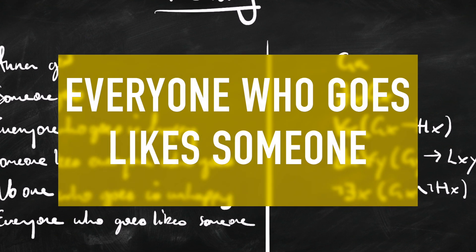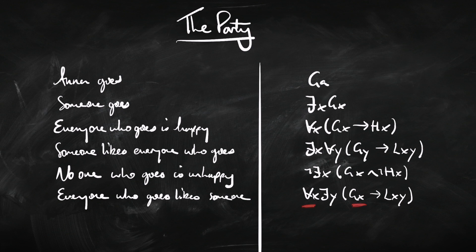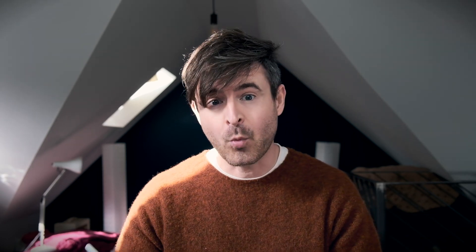'Everyone who goes likes someone.' For every person X, there is someone Y such that if X goes to the party, then X likes Y. Another way of putting that: for everyone who goes to the party, there's someone they like. The important thing is that it's X liking Y. The order of X and Y in the predicate 'likes' makes a difference — we're saying everyone likes someone, not that someone likes everyone.